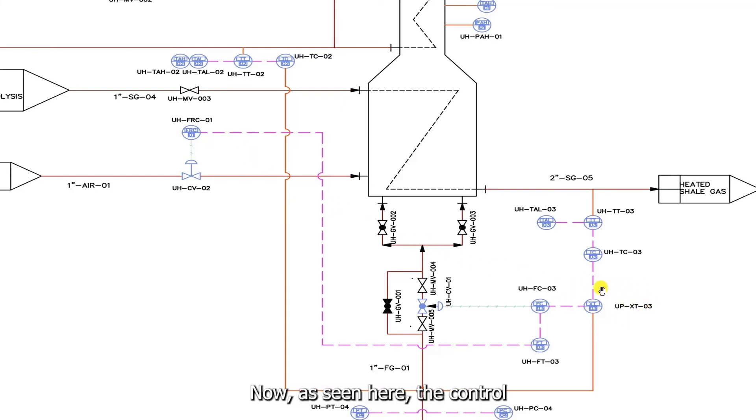Now, as seen here, the control loop performs a logic function on the two temperatures. The function is tagged XT-03. The present piping and instrumentation diagram does not indicate the nature of this function, but an educated guess is that this logic function is a comparison function. It takes the higher temperature measurement for the purpose of control.